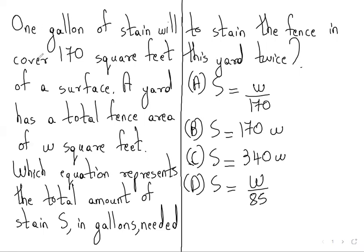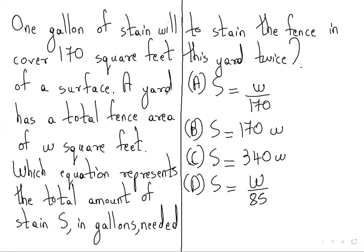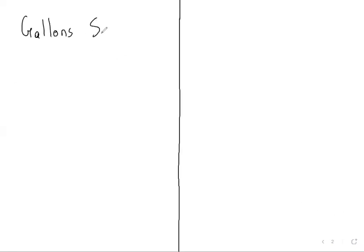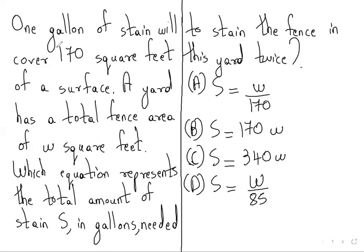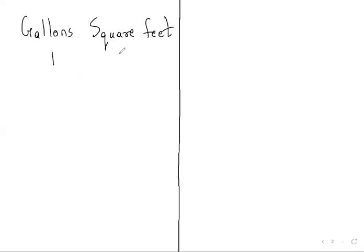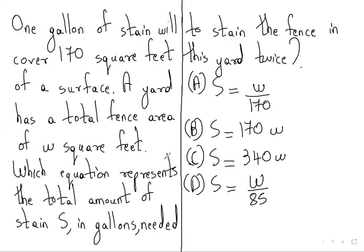So first here, what they have given? One gallon of stain will cover 170 square feet. We can write here gallons and here square feet. For one gallon, we have 170 square feet of a surface. Now they have said a yard has a total fence area of W square feet, which equation represents the total amount of stain S in gallons needed to stain the fence in this yard twice.